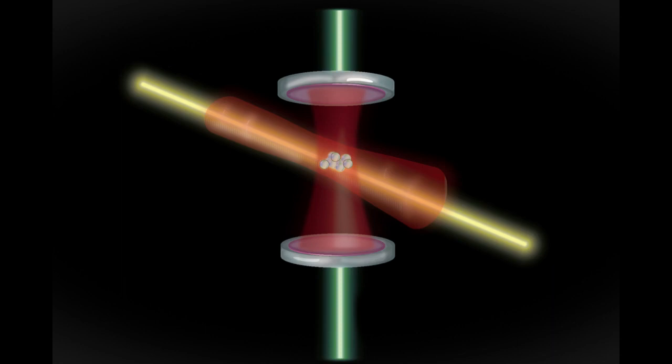Since humans began tracking the passage of time, they have done so using periodic phenomena, such as the motion of the sun across the sky. Today, vibrations in atoms are the most stable periodic events that scientists can observe.